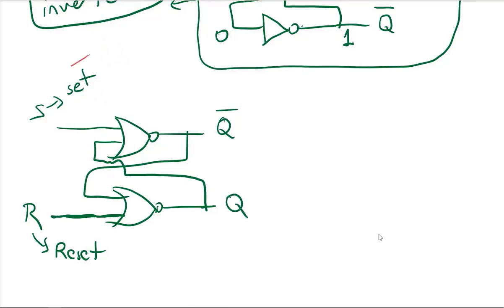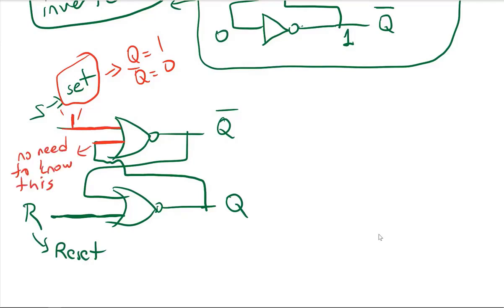If I make S equal to 1, I am trying to set it — meaning I am trying to make Q equal to 1 and Q-NOT equal to 0. Q and Q-NOT need to be the inverse of each other. If I put a 1 at the input of a NOR gate, I don't care what the other input is — it could be 0 or 1. Since this input is 1, it is dominant. So, making S=1 will make Q-NOT become 0, because a 1 input to the OR gives 1, and then the NOT gives 0.